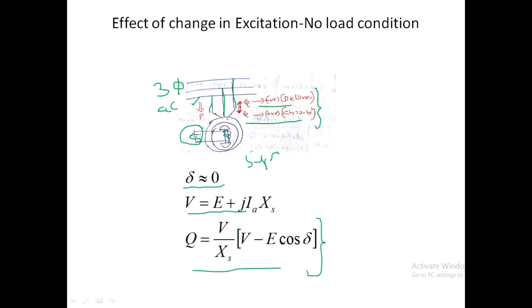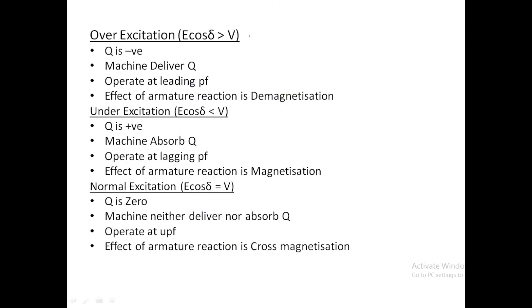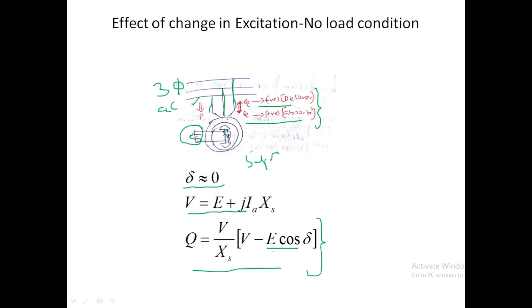We can consider three conditions. The first case is over-excitation, which means the term E cos delta will be greater than V. We are giving more DC supply to the field coils than the rated value. If E cos delta is greater than V, then Q will be negative.